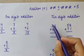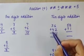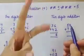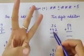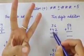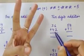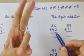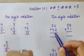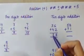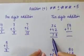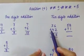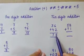Then we will move to the next digits. This is 3 plus 4. So we will open 3 fingers: 1, 2 and 3. The number to add is 4, so we count on after 4: 5, 6, 7. The answer is 7. So the whole answer is 78 — 36 plus 42 is 78.